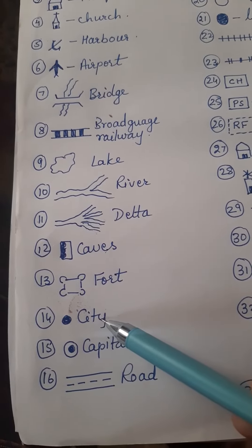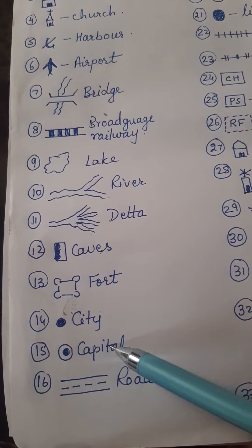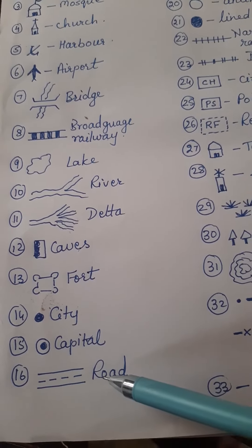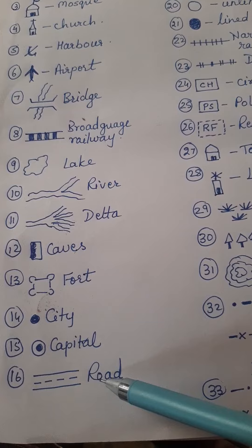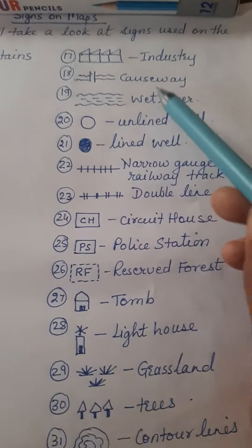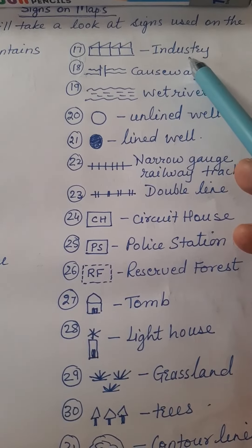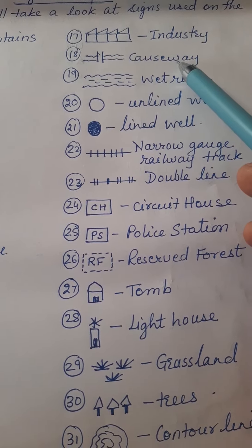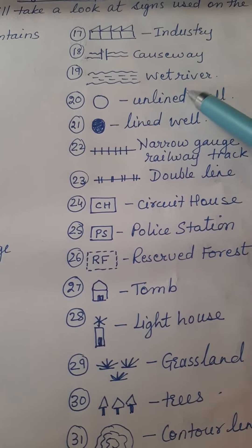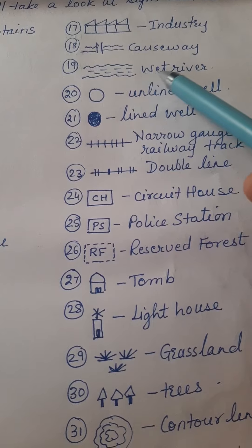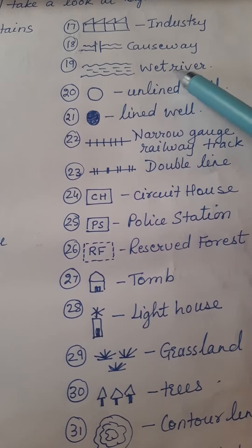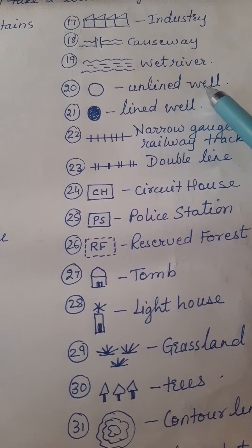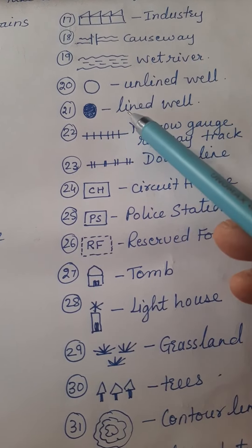This sign shows fords. This is for a city. This is for the state or capital of the country. This sign shows the road. This is for industries. This is to show a causeway, which is a small bridge on the river. This sign shows a wet river, meaning there is water in it.